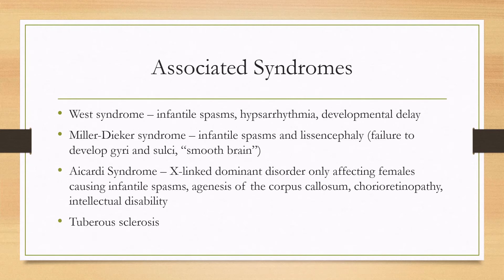There are some associated syndromes in which infantile spasms are a part of. West syndrome has the spasms, the hypsarrhythmia, as well as developmental delay. Miller-Dieker syndrome is when you have infantile spasms and lissencephaly. Lissencephaly is a failure to develop gyri and sulci, so you won't have the normal contours of the brain — it's called smooth brain.